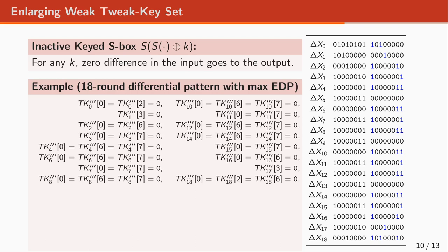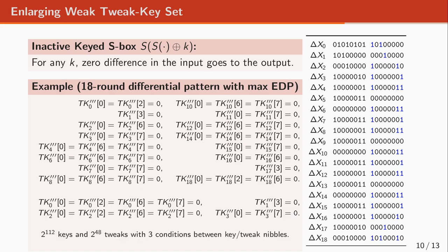Those tweak key nibbles are listed here, and since the round tweak keys are iterative after four rounds, all of these equations can be simplified to a short list. Satisfying these equations requires the 128-bit key to be one of 2^{112} weak keys, and the tweak must be one of 2^{48} weak tweaks — but with three extra conditions between key and tweak nibbles, so there are exactly 2^{36} weak tweaks for each weak key value.